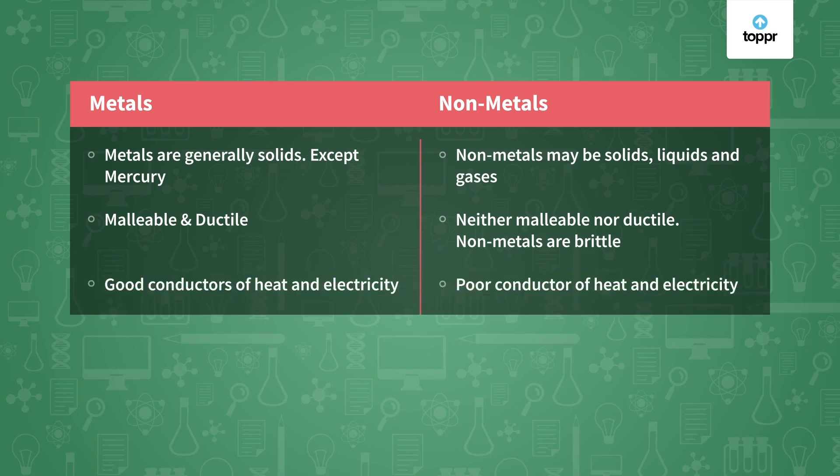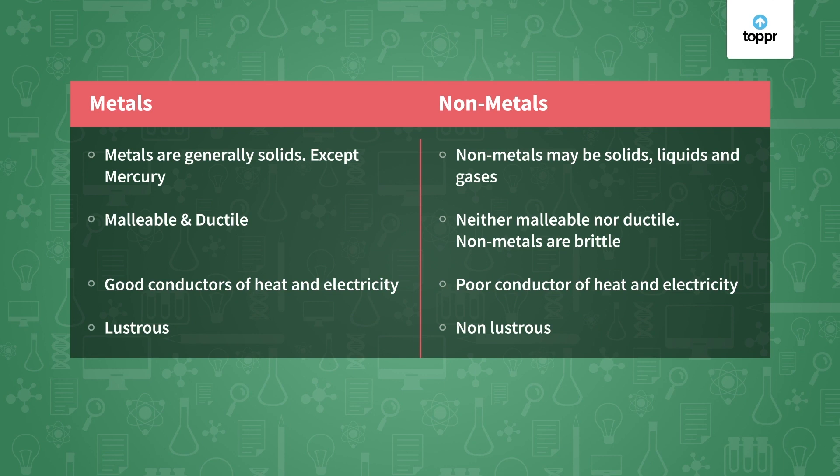Metals are good conductors of heat and electricity. That is why we have copper and aluminium wires around us. But non-metals, on the other hand, are poor conductors of electricity and heat. Metals are also lustrous, but non-metals are non-lustrous — that means they do not shine, they do not have a shiny appearance.